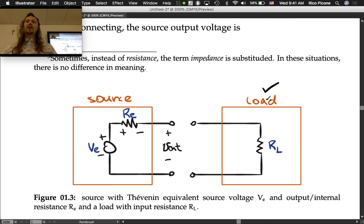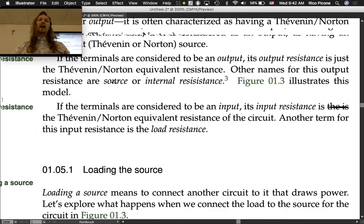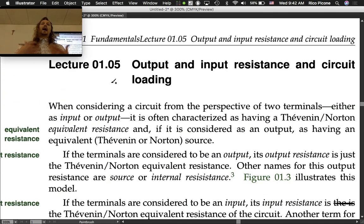For instance, you might have a light bulb or something like that that would be considered to be a typical load resistance. A source is something like a battery or something that supplies power to the circuit. These terms come up a lot - the terms of output resistance or input resistance - and I think they cause a lot of confusion.